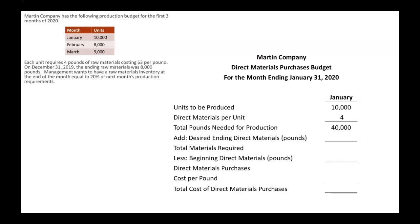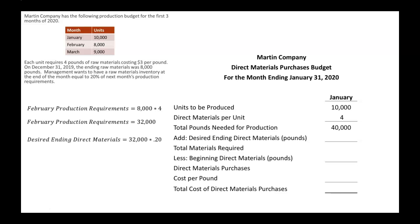Now we want to add in our desired ending direct materials. They told us that our ending materials inventory should be equal to 20% of next month's production requirements. So we need to figure out February's production requirements. We take the 8,000 units being produced in February, multiply by the four pounds of materials needed per unit, and we see that February's production requirements is 32,000. So our desired ending direct materials needs to be 20% of that, or 6,400. We'll plug that 6,400 in as our desired ending direct materials.